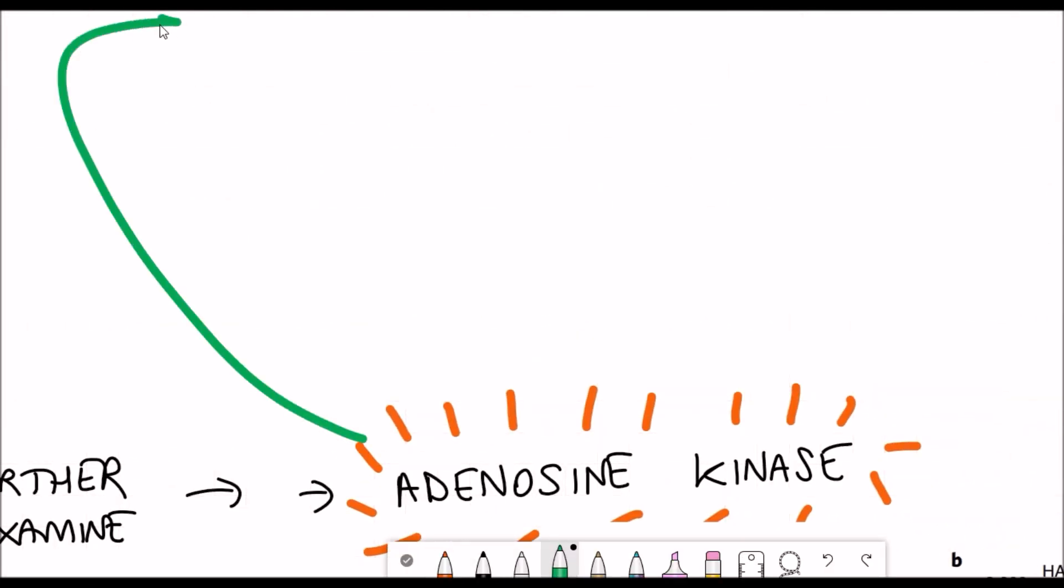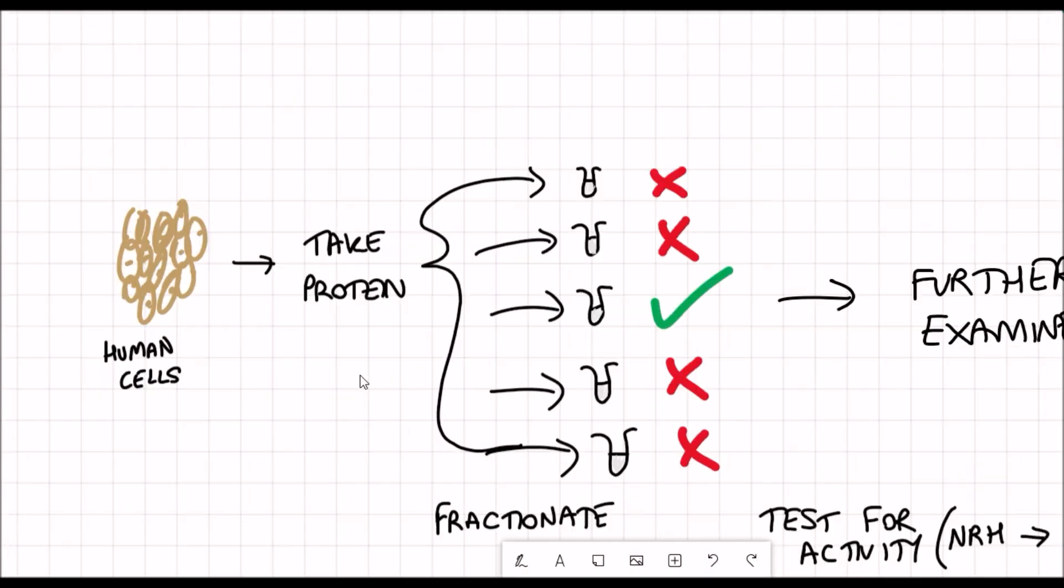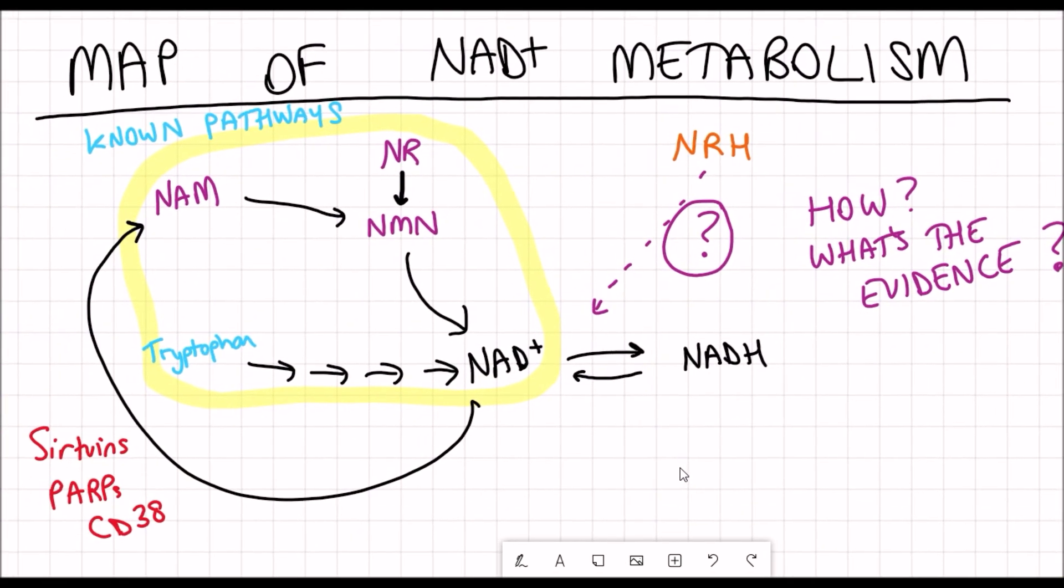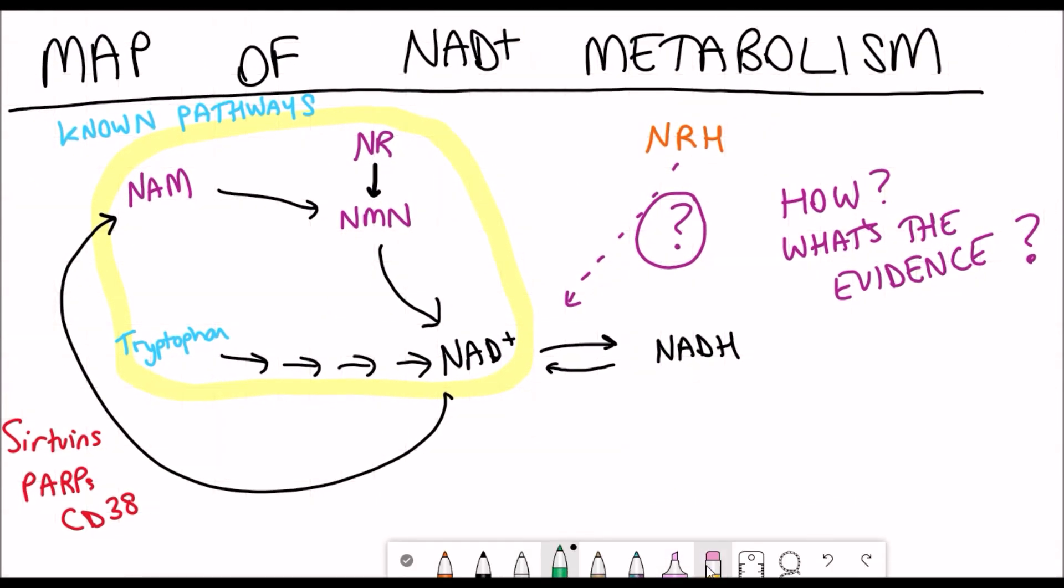I feel like a summary is needed at this point to really explain why this is interesting and how this actually relates back to the big picture that is NAD plus metabolism. If we actually go back to the map that I drew out to begin with and fill in the knowledge that we now have, we know that NRH through the activity of adenosine kinase is converted to NMNH, and as already known in the literature, NMNH can be converted to NADH and NADH can be converted to NAD plus.